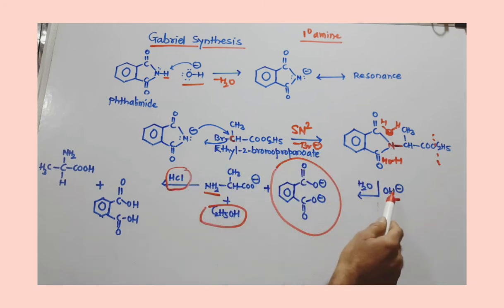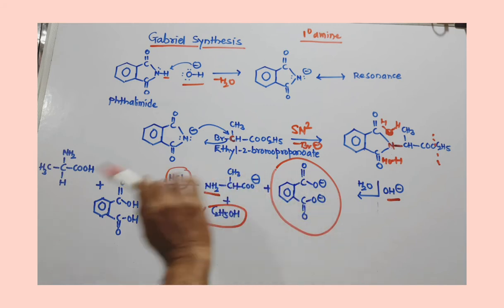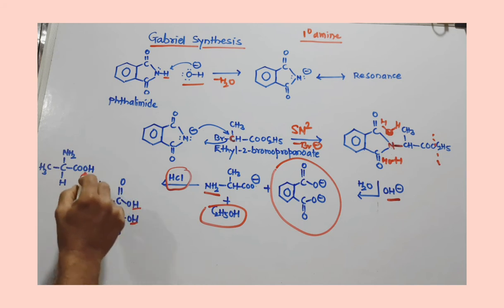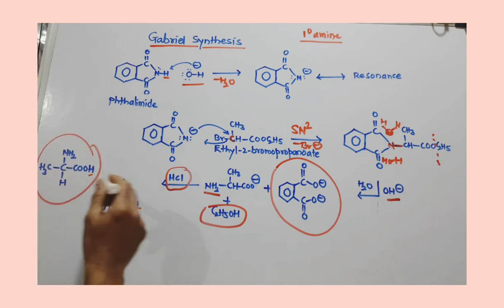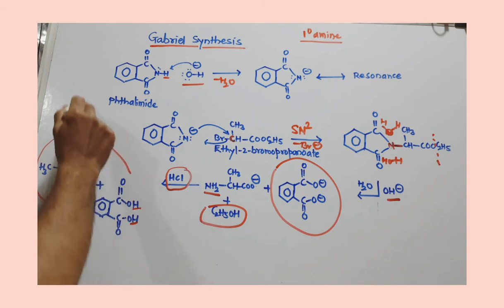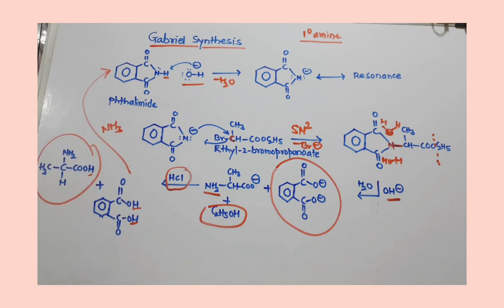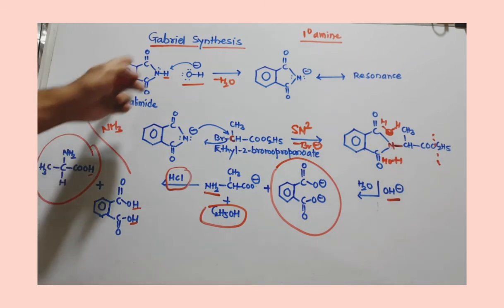Which will give H to all these three carboxylate ions. Because of this, I joined H here. And we get here our alpha amino acid which is alanine. And this phthalic acid is generated. This phthalic acid can be used again to produce phthalamide when it is treated with concentrated ammonia.